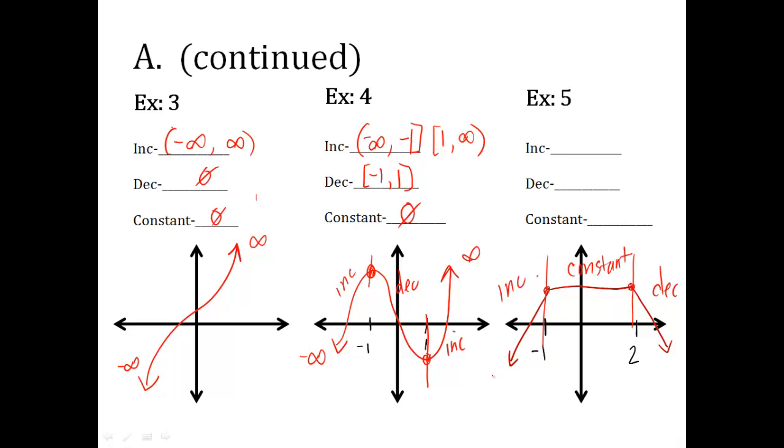So let's write this. From negative infinity up until you get to negative 1, it includes negative 1, the graph is increasing.